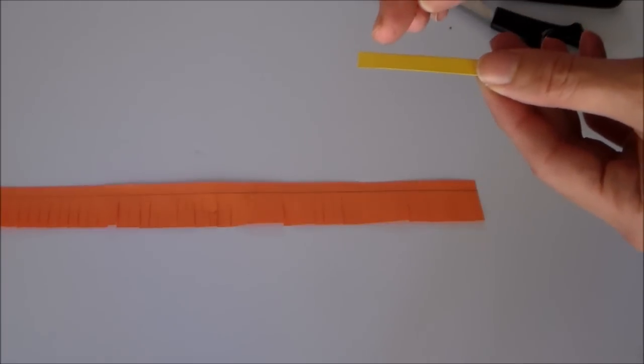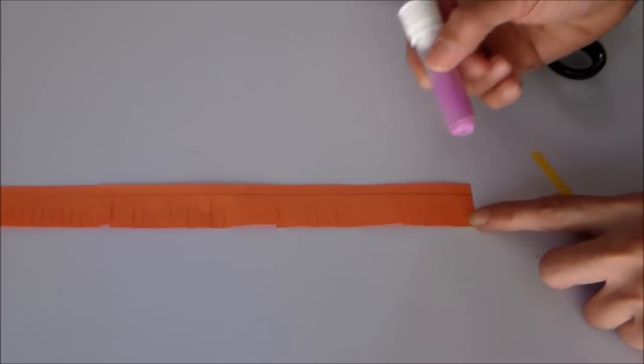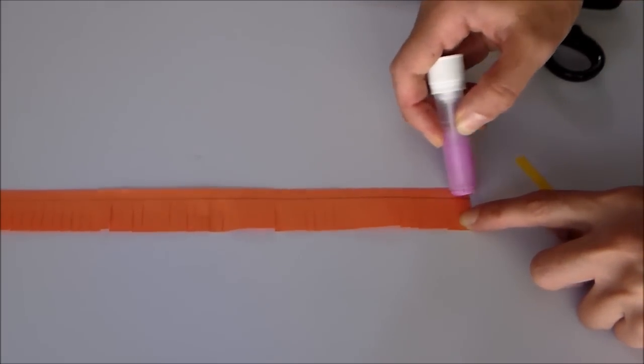Next step, we're going to glue about three-quarters inch of your narrow piece of paper onto the edge of your wider piece.